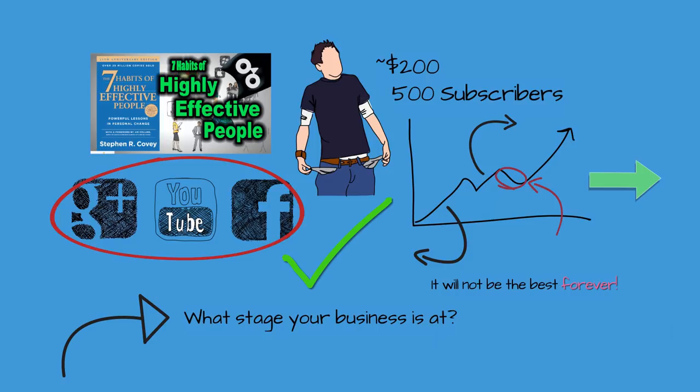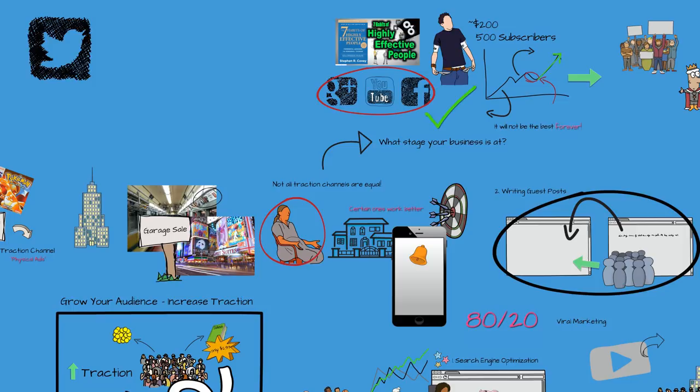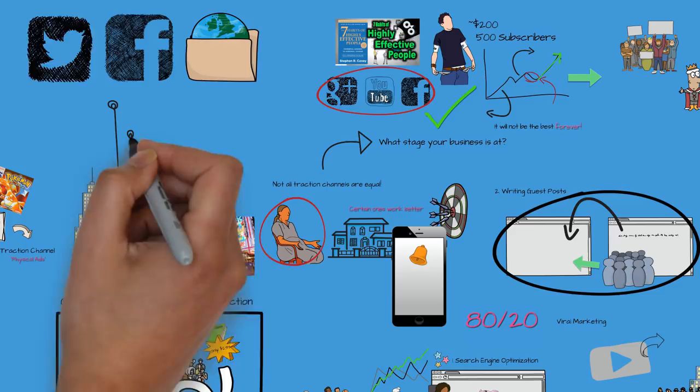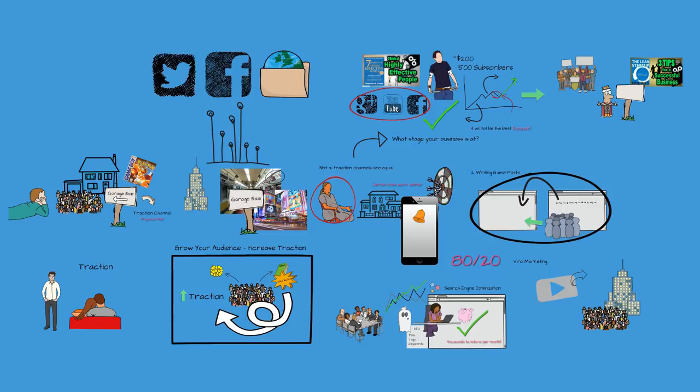Those were the basics on how to attain traction. New traction channels emerge every day. Twitter didn't exist 10 years ago, Facebook didn't exist 15 years ago, and the Internet certainly didn't exist 20 years ago. And maybe it did. My point is, new traction channels emerge every day, but as long as you understand the core principles that you learned today, we'll be able to translate that knowledge to fit any new technology the future brings.